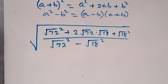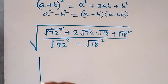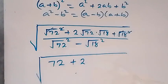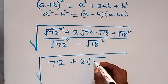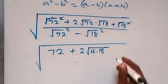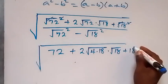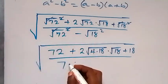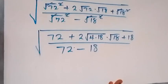When we simplify further, the square cancels the square root. So root 72 squared leaves 72, and root 18 squared leaves 18. The expression becomes square root of: 72, plus 2 times root 72 — which we can write as root 4 times 18, since 4 times 18 gives us 72 — times root 18, plus 18. Then divided by root 72 squared minus root 18 squared.